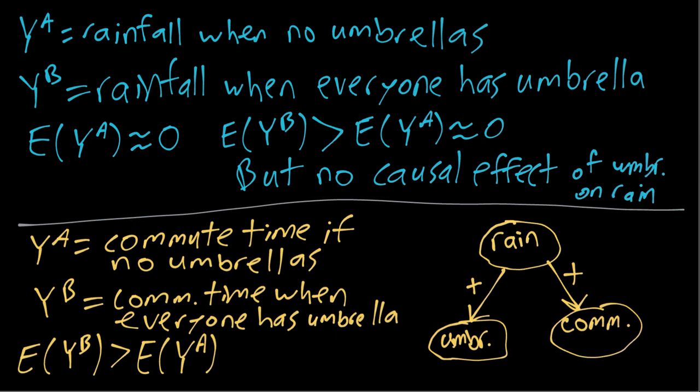So what this leads to is it leads to this statistical relationship or this correlation between umbrellas and commute time, even though there's no causal effect of umbrellas on commute time. In this case, rain would be what's called a confounder.